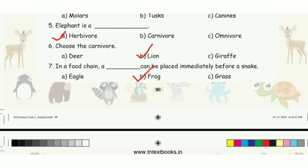Fifth question: elephant is a? The answer is option A, herbivore. Sixth question: choose the carnivore. The answer is option B, lion.